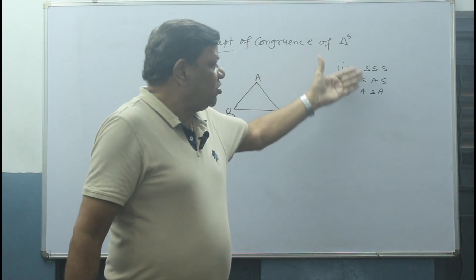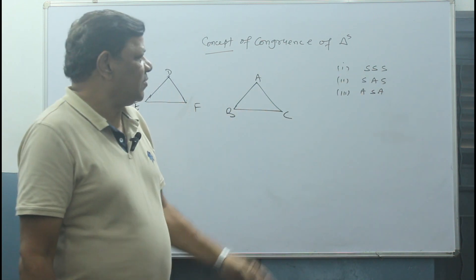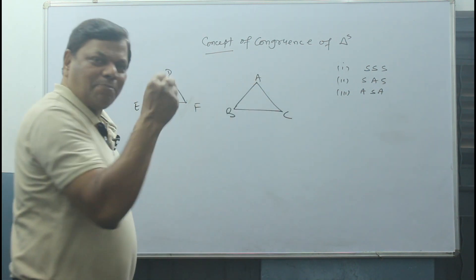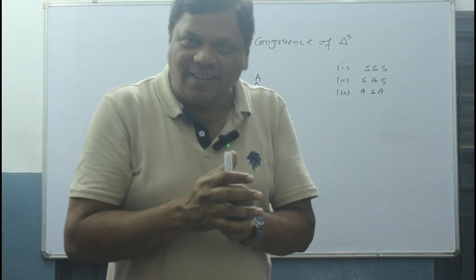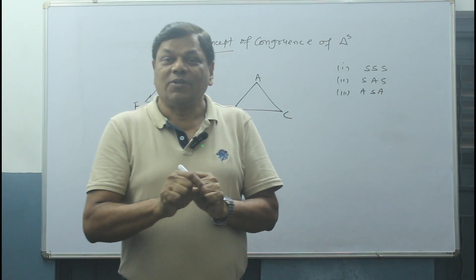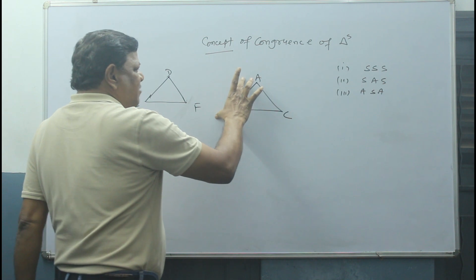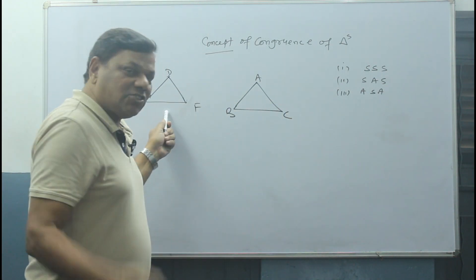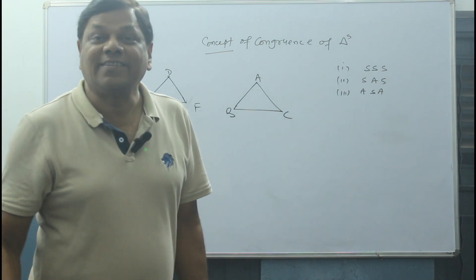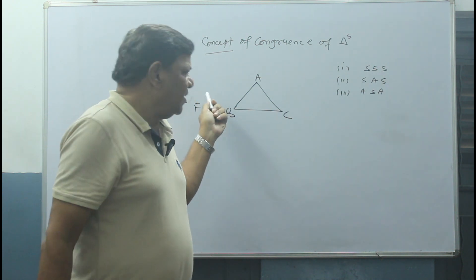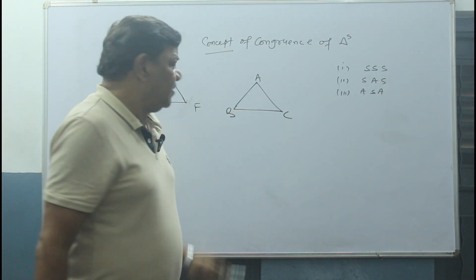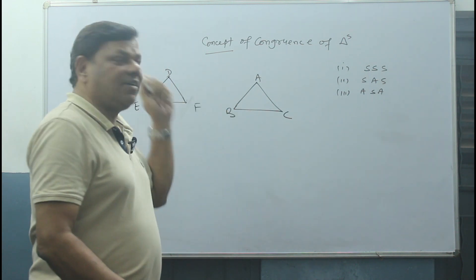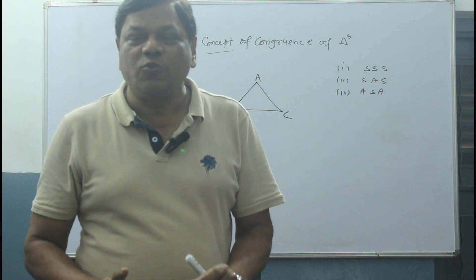If I pick this triangle up and drop it on the other, all the sides and all the angles should match dot to dot — exactly the same. If one side is 4 centimetres, the corresponding side is also 4 centimetres. If this side is 3 centimetres, this side is also 3 centimetres. If this side is 4.5 centimetres, this side is also 4.5 centimetres. If this angle is 70 degrees, this is also 70 degrees. So all three angles and three sides of one triangle are exactly the same as the other triangle.